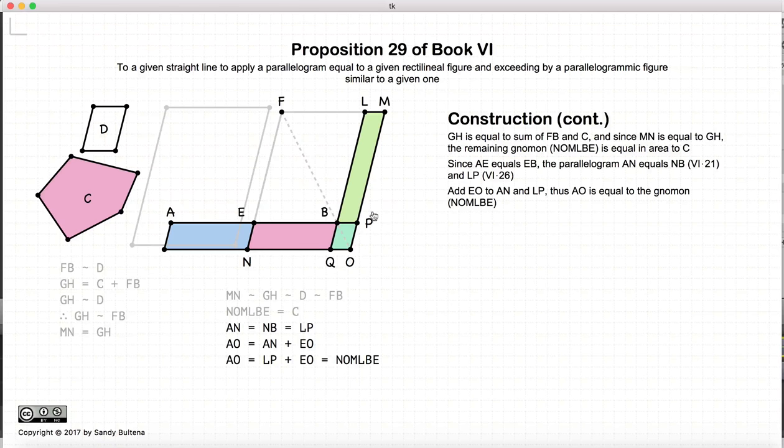Well, LP plus EO is just equal to the NOMN. So we have AO equals the NOMN.